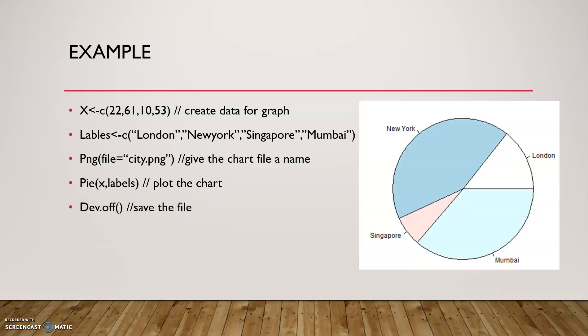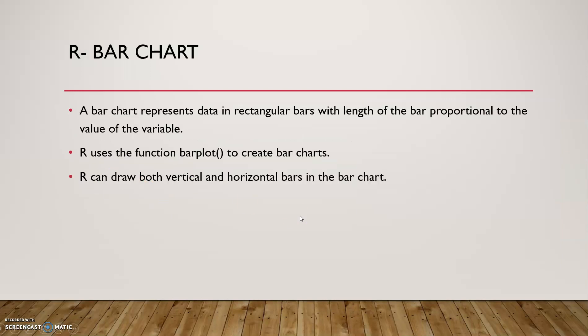Example of the pie chart: x is the number of chart, c of 22, 6, 110, 53 to create data for graph. And this is the label of the chart. PNG means chart name is city.png. Then pie of x, label to plot the chart. This is an example of pie chart.